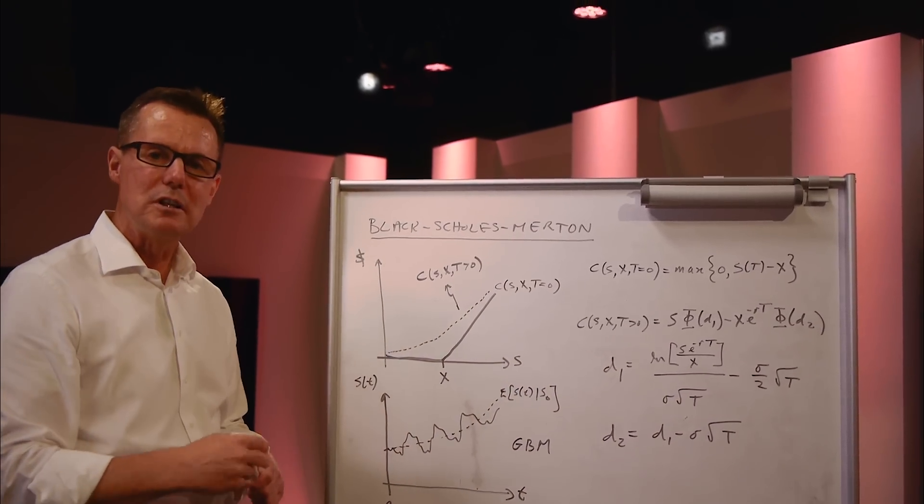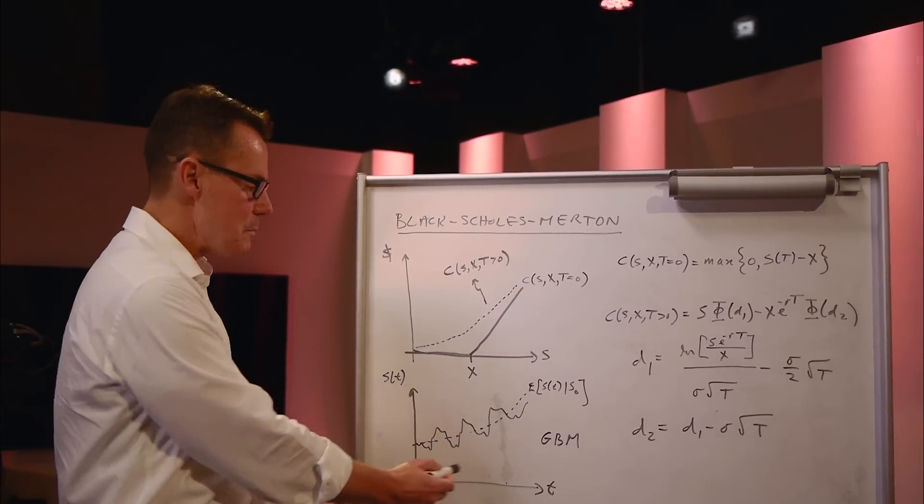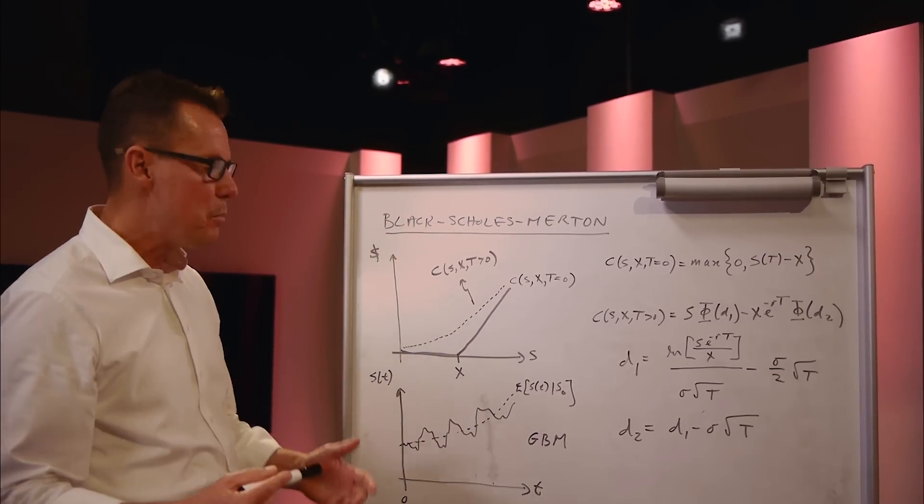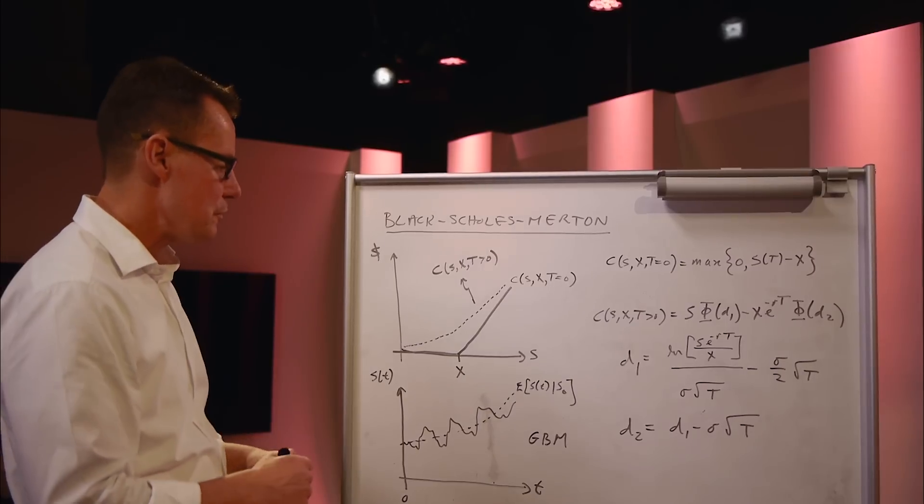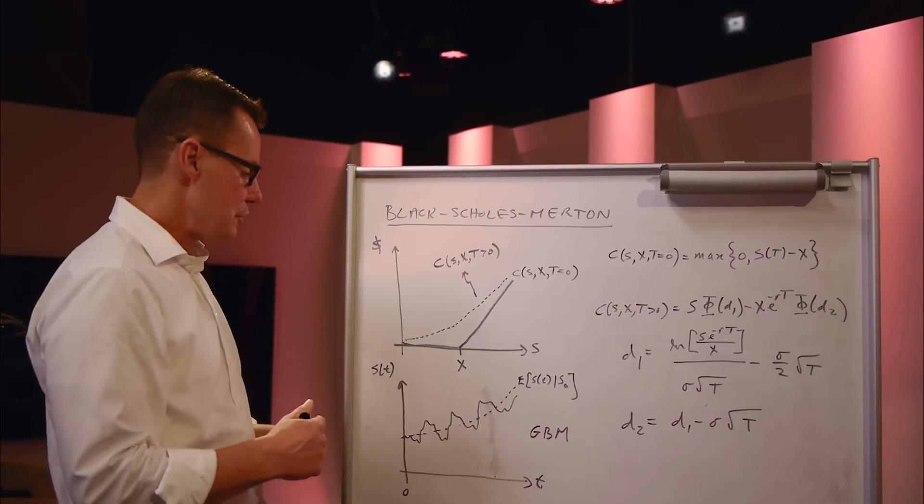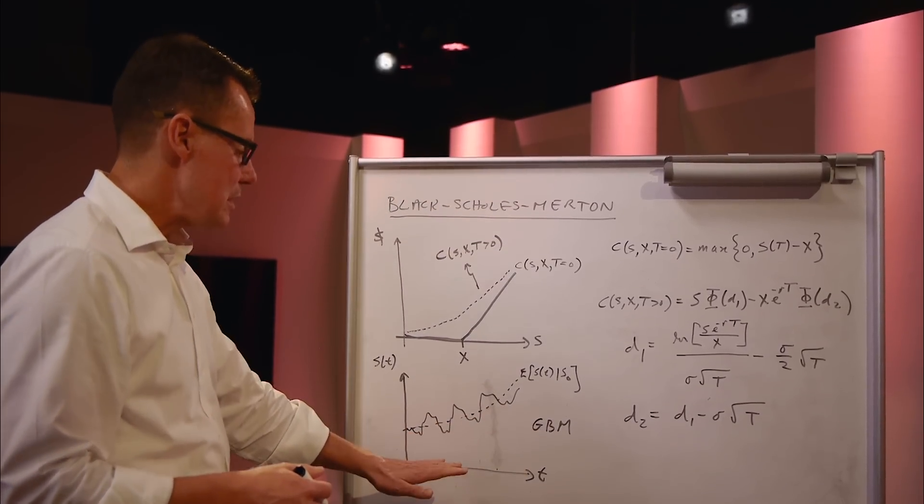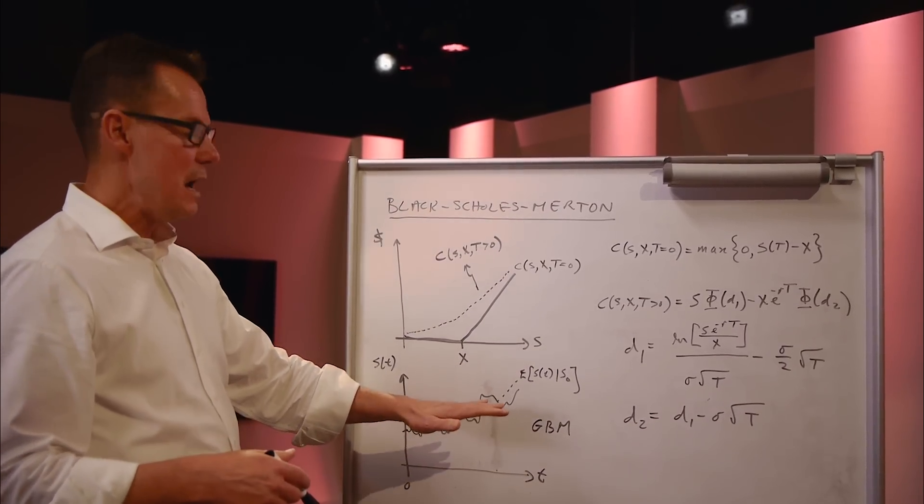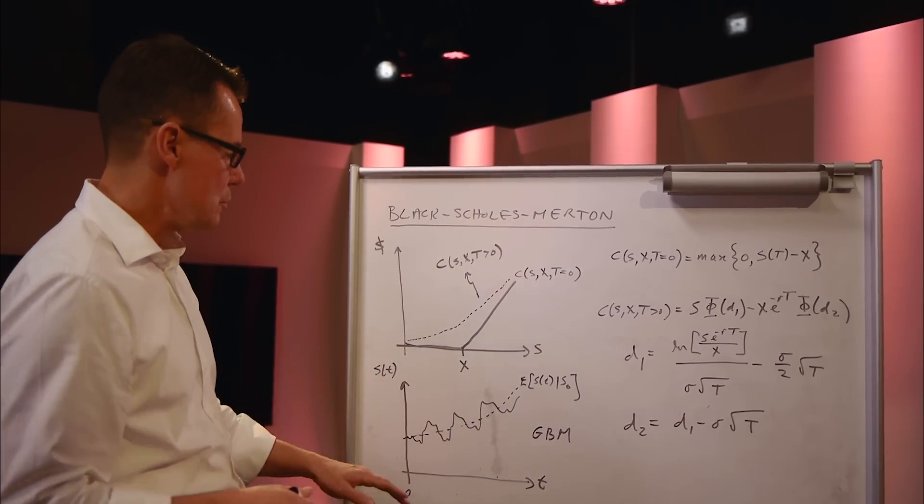the important assumptions that go into the Black-Scholes model is the dynamics of the underlying stock price. It's something called geometric Brownian motion. And the important components of assuming geometric Brownian motion for the dynamics is the fact that the volatility of the stock is constant. And also, it turns out, an assumption here is that the risk-free rate is held constant over the term to expiry.